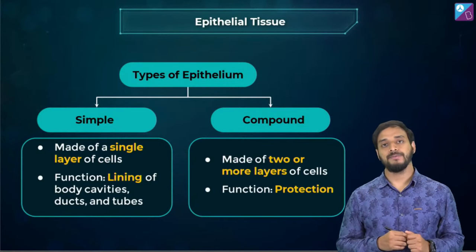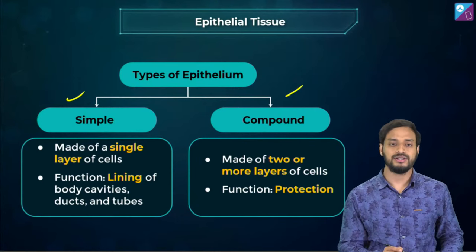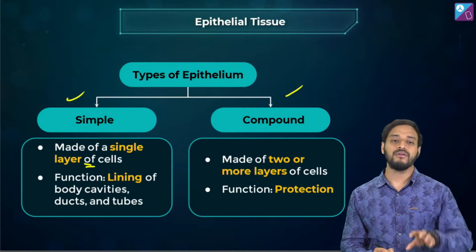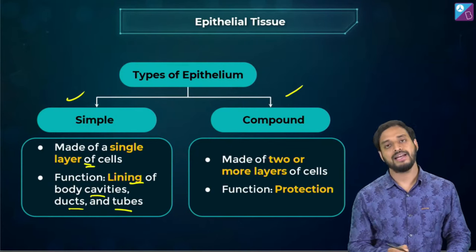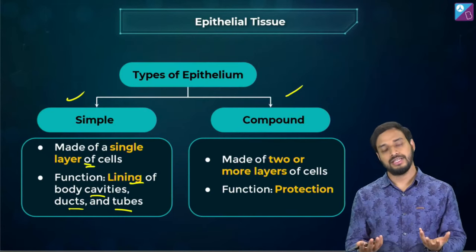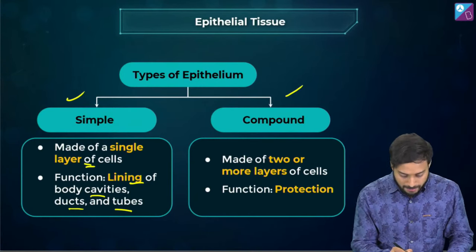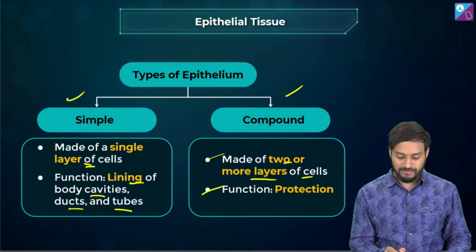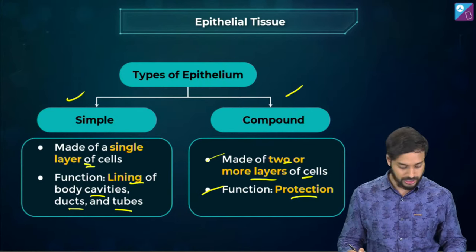Types of epithelium — simple and compound. Simple epithelium is made up of a single layer of cells. Their function is lining the body cavities, ducts, and tubes — mostly present in blood vessels. Compound epithelium is made up of two or more layers of cells, and their major function is protection.